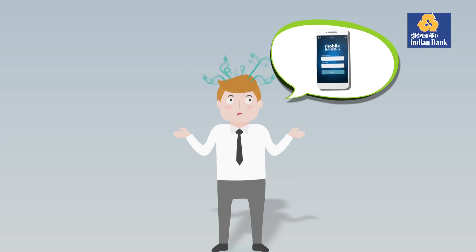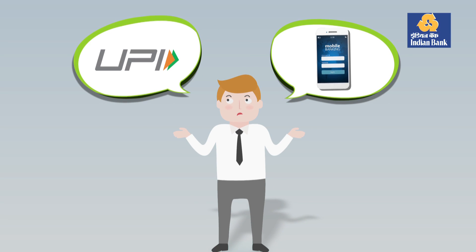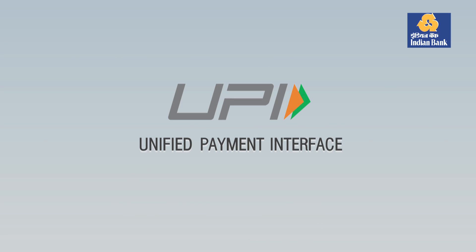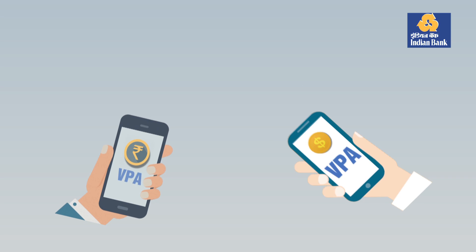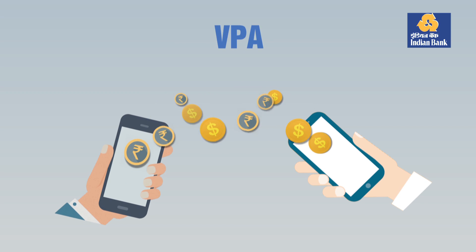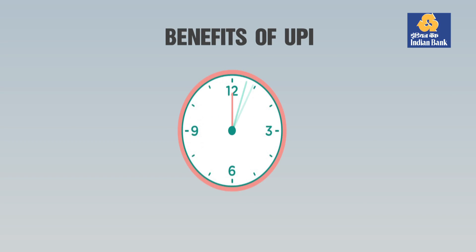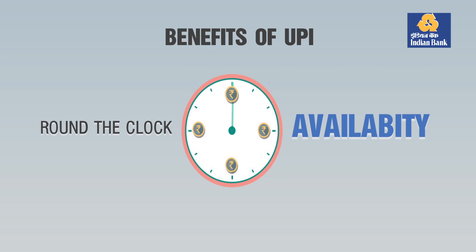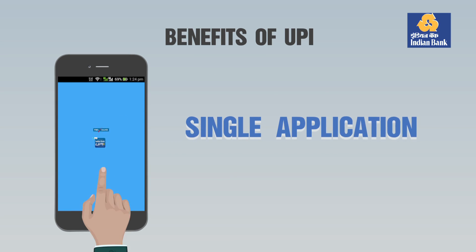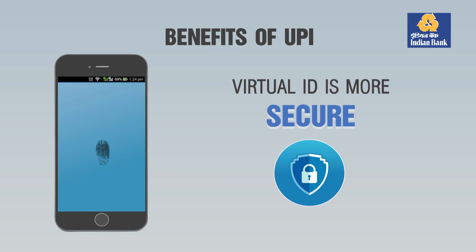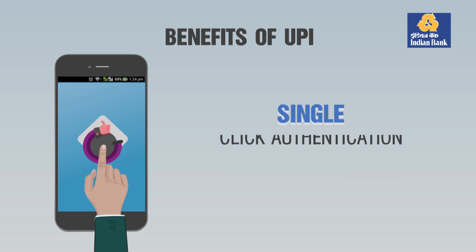If digital banking is on your mind, UPI must also be — but not quite sure what it is all about? Indian Bank is always happy to help you. UPI stands for Unified Payment Interface. It is a quick and easy method of sending and receiving funds through a Virtual Payment Address or VPA. The benefits of UPI are: round-the-clock availability, single application for accessing different bank accounts, use of virtual ID for more security, no credential sharing, and single click authentication.